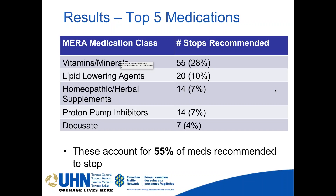Looking at the kinds of recommendations we tended to make, the top five categories are: vitamins and minerals (more than a quarter of recommendations), lipid-lowering agents in patients perhaps in their final weeks from advanced cancer, homeopathic and herbal supplements, the dreaded proton pump inhibitor, and docusate — which is no longer recommended by guidelines, given it doesn't appear to be better than placebo. These five recommendation classes together accounted for more than half of all our medication stops.